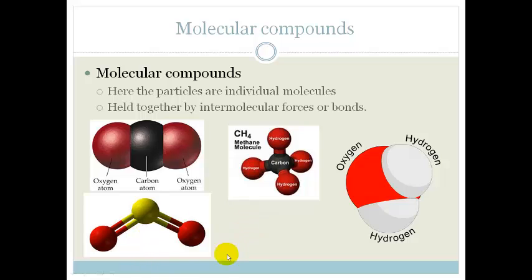What you need to understand is how these different compounds are drawn differently. This here is called a space filler model. In other words we have drawn it showing all the space that the atom or molecule should be taking up. Here we have got what is called a ball and stick where the sticks represent the bonds and the balls represent the different types of atoms. So in this case we have got a single bond there whereas here we have got a double bond. So those are molecular compounds.